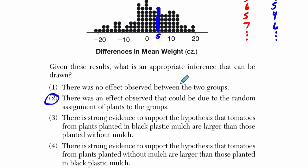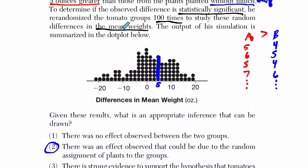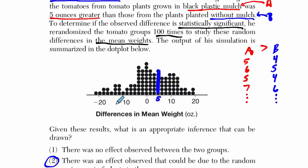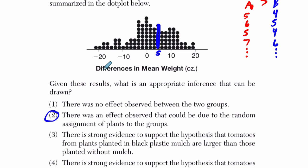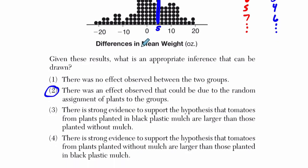Choice one says there was no effect observed between the two groups — well, there was, there were lots of differences. Choice three says there is strong evidence to support the hypothesis that tomatoes from plants planted in black plastic mulch are larger than those without — no, there's not, because even just randomly reshuffling those tomatoes we're getting way more than five ounces of difference. Choice four says there is strong evidence to support the hypothesis that tomatoes from plants planted without mulch are larger — we don't see that. It's the differences in mean weights. Negative differences would be situations where B is larger than A, and that is happening sometimes, but it seems A is typically larger than B. But again, these are random assignments. So the answer is two. Hope that helps.